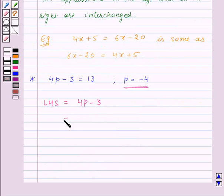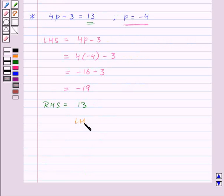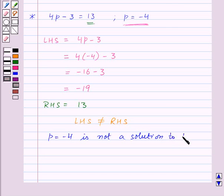Now on substituting the value of p equal to minus 4, we get 4 into minus 4 minus 3. So this is equal to minus 16 minus 3, which is equal to minus 19. Now RHS is equal to 13, so that means LHS is not equal to RHS. Thus p equal to minus 4 is not a solution to the given equation.